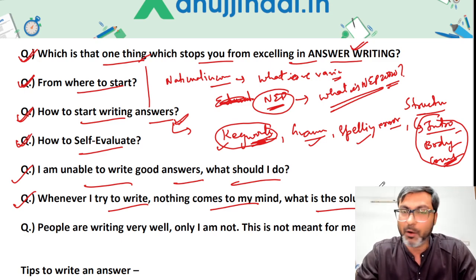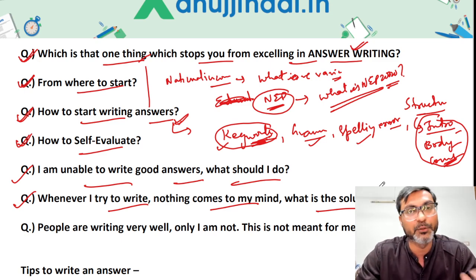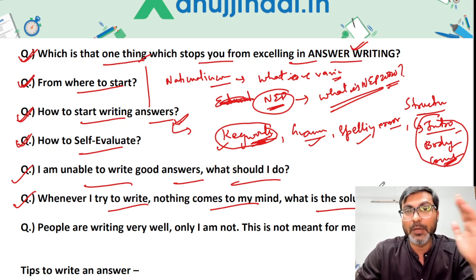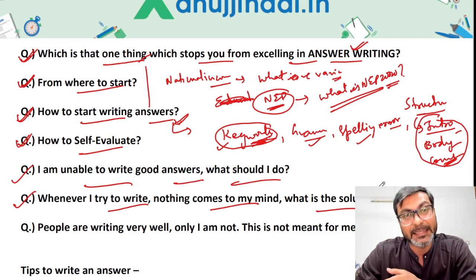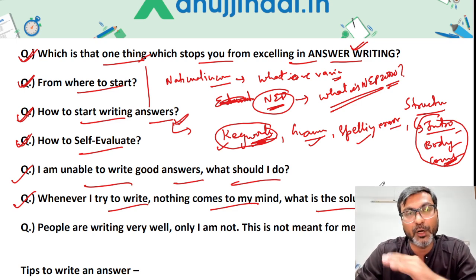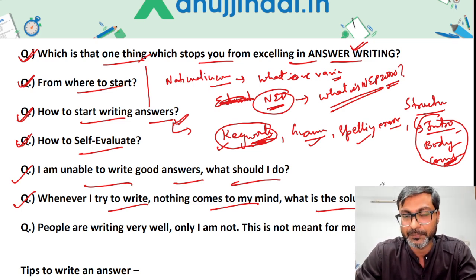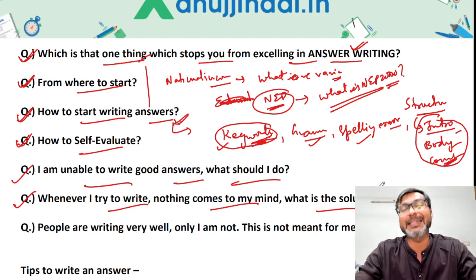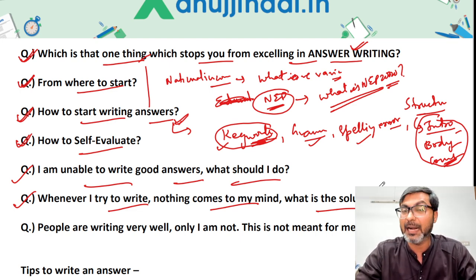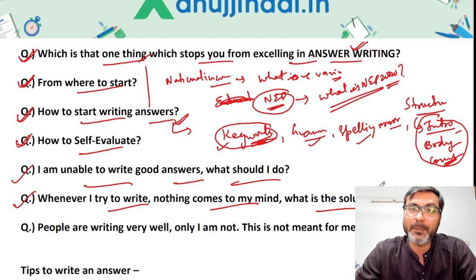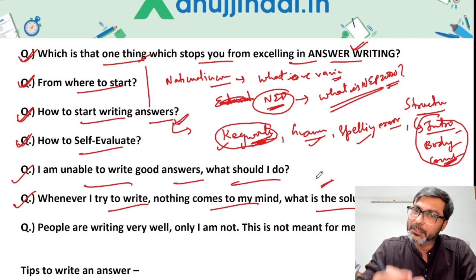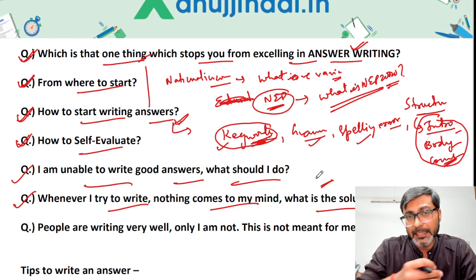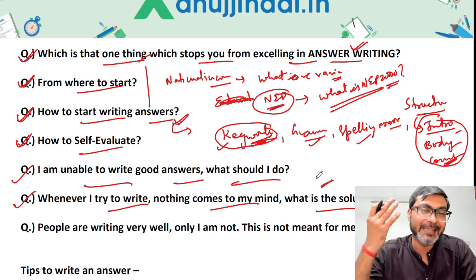What you have to do is write down on paper what has been asked in the question and what all you have to write. Before you start writing the answer, make pointers for yourself — what all I have to write in this particular question. If you directly start writing, you will go blank. You can write the pointers on pen and paper, or think through them in your mind first.